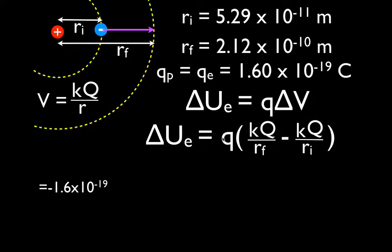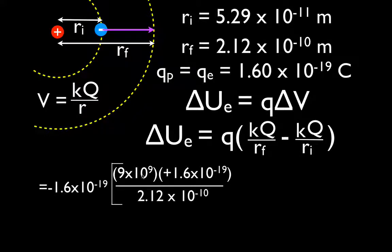The change in potential energy equals the amount of charge — the charge on an electron, minus 1.6 times 10 to the minus 19 Coulombs — multiplied by K times Q over rf. When you calculate potential, potential difference, or change in potential energy, you have to use your positive and negative signs, because there is a difference between positive and negative potential and positive and negative changes in potential energy. The sign for the electron is negative. The sign for the proton, which is creating the potential, is positive.